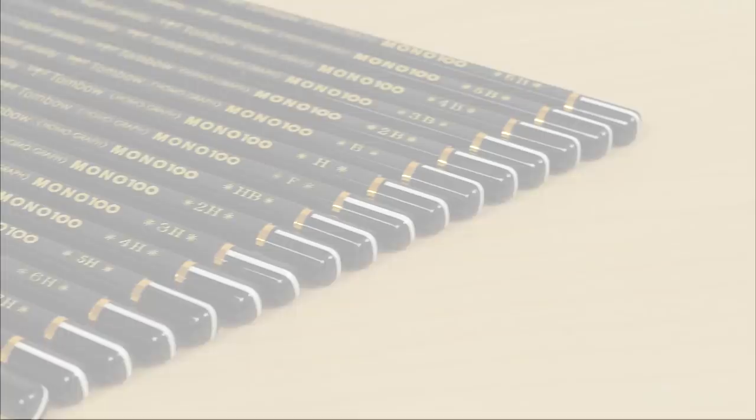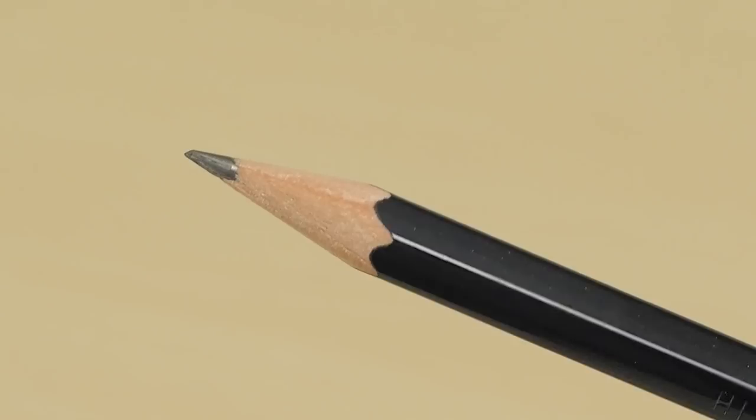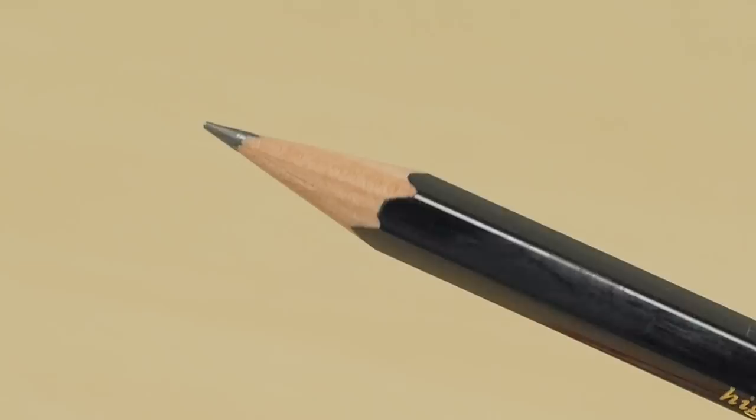The Tombow Mono 100 product line includes a wide range of 17 different lead grades. Each pencil contains a high-density lead core of very fine particles, which makes it break-resistant. It's also incredibly smooth to write with.